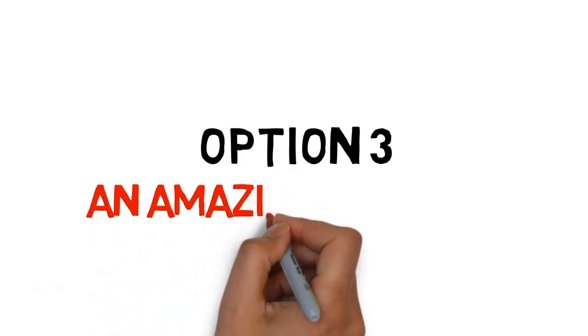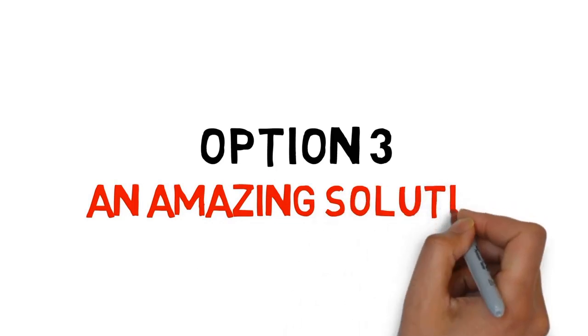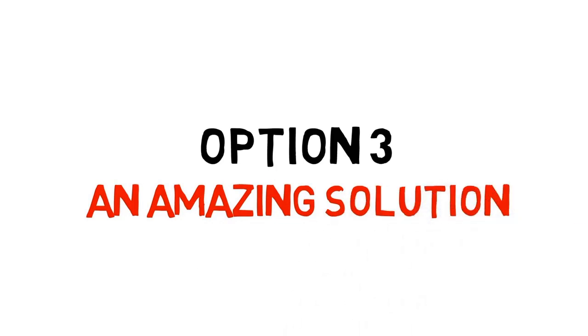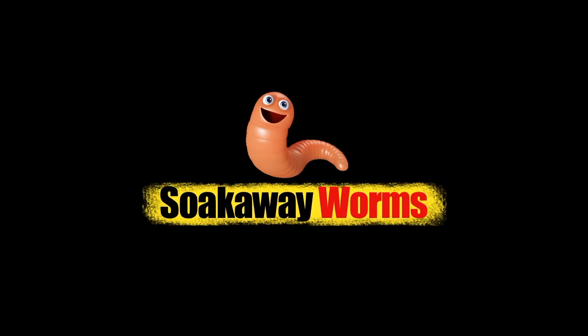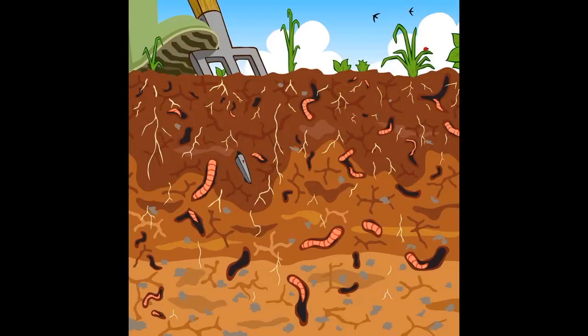Option three is an amazing solution that will fix all your septic tank and soak away problems. Soak away worms are an incredible safe, clean, natural and organic solution. Worms have been around for thousands of years, breaking down and converting waste into safe, clean organic matter.